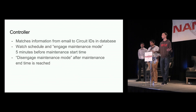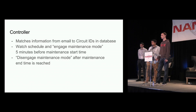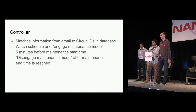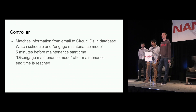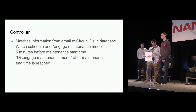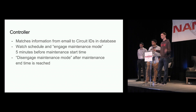The controller matches information from the emails to circuit IDs in the database. Once we have that information, we can identify the device that the circuit is on, the interface it's connected to, the peer, the session, and any other information needed to actually shift traffic. The controller then watches the schedule and looks for events that are about to go into their maintenance period — for our purposes, we set it to about five minutes before the maintenance start time. About five minutes before maintenance starts, it kicks off the script that shifts traffic off that link. The controller keeps watching and waits until the event reaches its end time, then disengages maintenance mode by running the script that shifts traffic back onto the link.